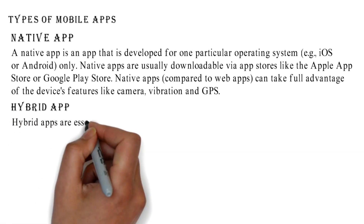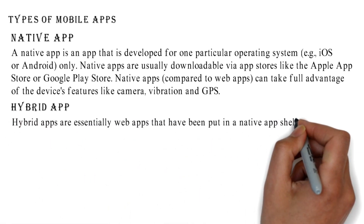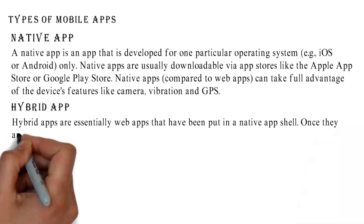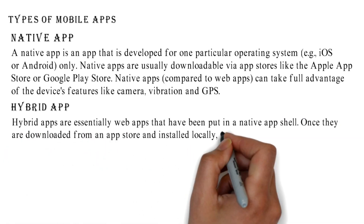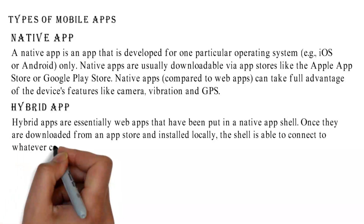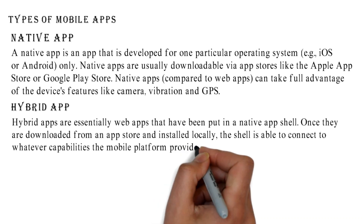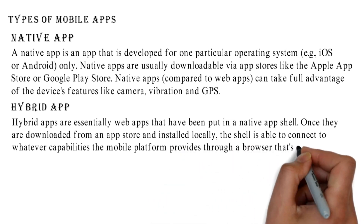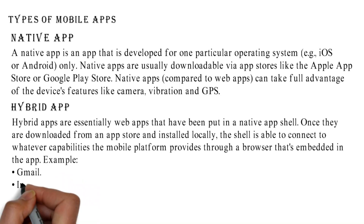Hybrid apps are essentially web apps that have been put in a native app shell. Once downloaded from an app store and installed locally, the shell connects to the mobile platform's capabilities through a browser embedded in the app. Examples include Gmail, Instagram, and Twitter.